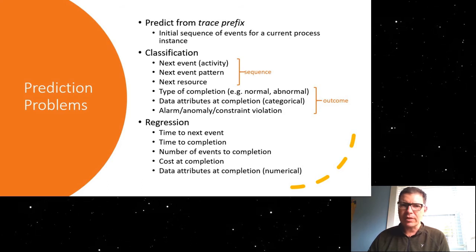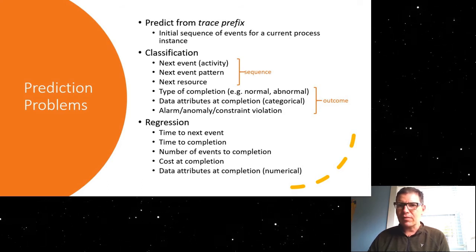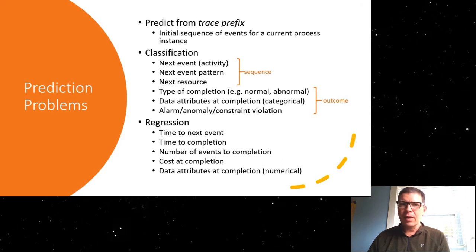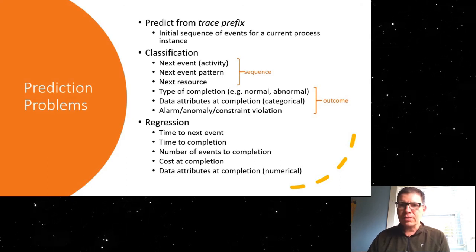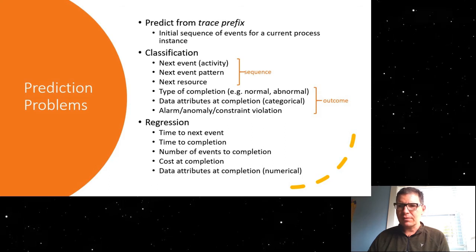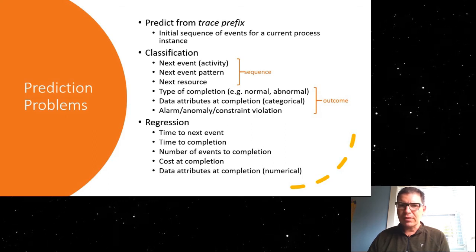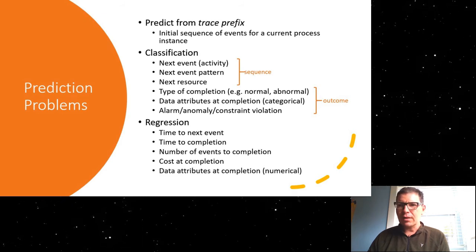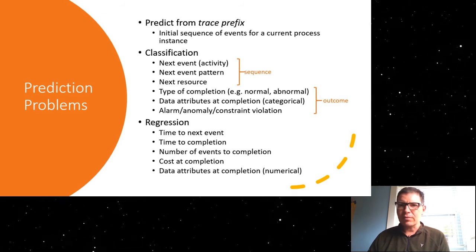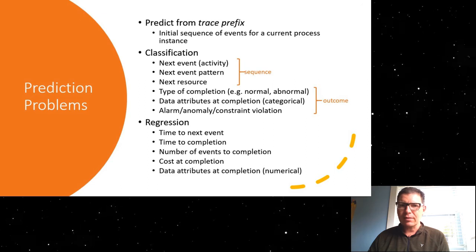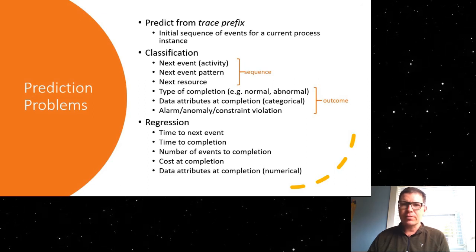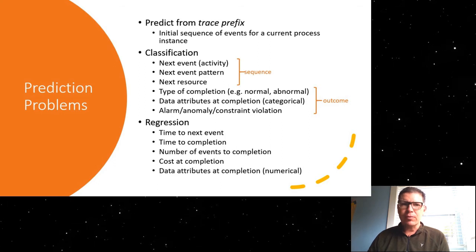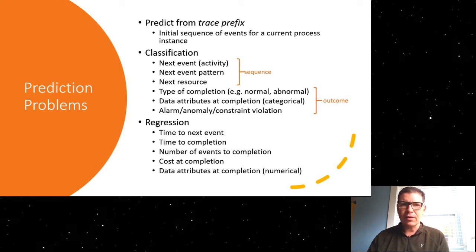Or we can look at outcome oriented problems. So how will this process instance end? Will it end normally or abnormally? Will a particular constraint be violated, et cetera? Or we have regression type problems. So here, for example, the time to the next event or the time to completion, we might look at if we have cost information, at the cost at completion, et cetera. And, of course, we can extend this to application-specific data if we have such data in the event log.